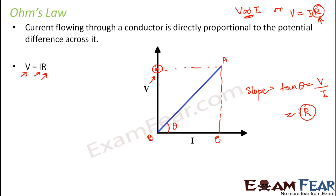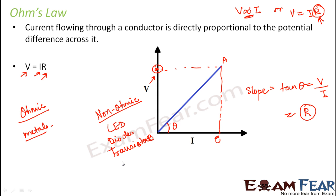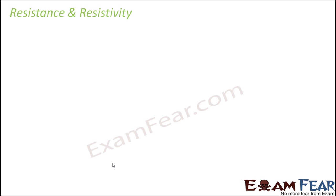When talking about Ohm's Law, we must discuss two categories of substances. Substances that follow Ohm's Law are called ohmic substances, and those that do not are called non-ohmic substances. Examples of ohmic substances include metals like copper, iron, and silver wires at their operating temperatures. Non-ohmic substances include LEDs, diodes, transistors, and bulk filaments — these do not follow Ohm's Law.